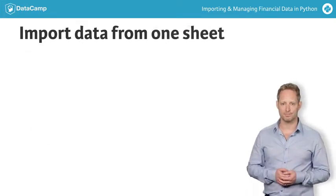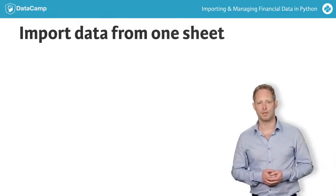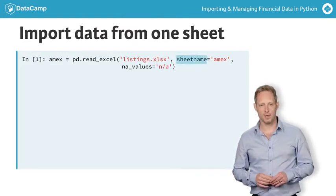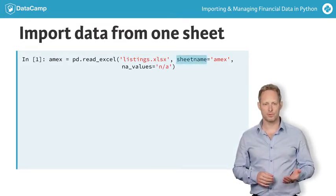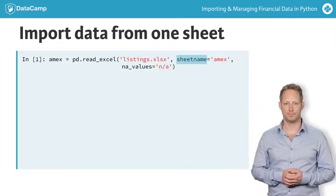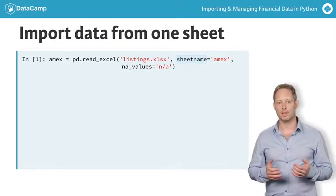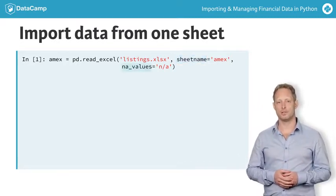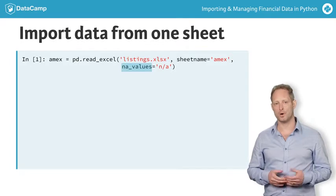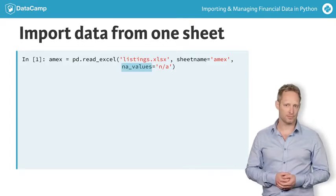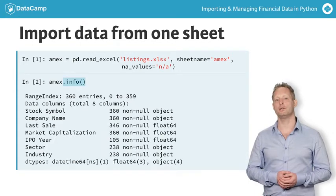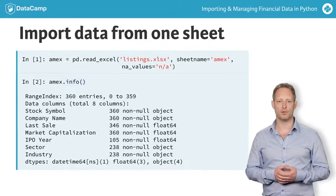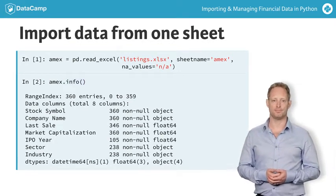Let's look at an example. To read the worksheet for the AMEX Exchange, simply provide the label to the read_excel parameter sheet_name. Note that read_excel also uses the na_values parameter to parse missing values. If you call the .info method on the result, you will notice the same output you obtained earlier from the read_csv method.